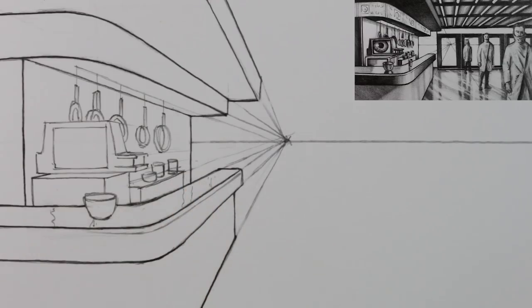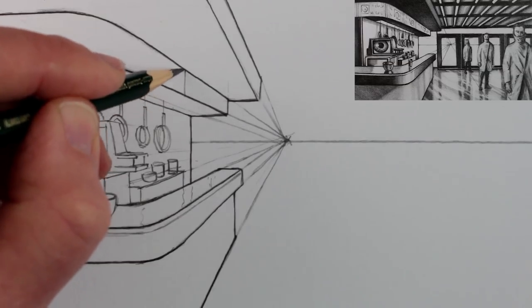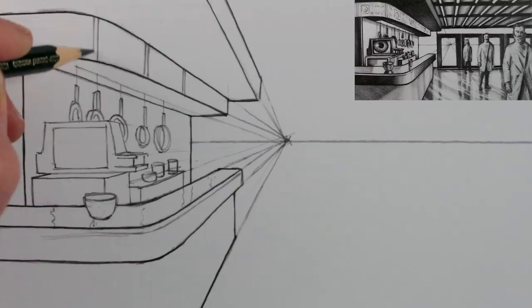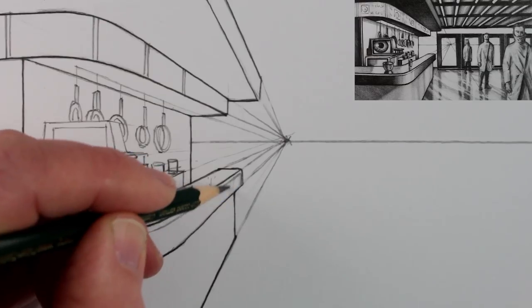Now we can divide the display panel at the top into segments. Next I will speed up the drawing here for a little bit while I add some tone, some light and dark graded tone.